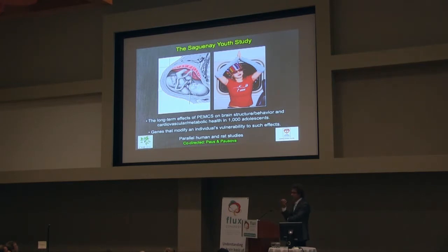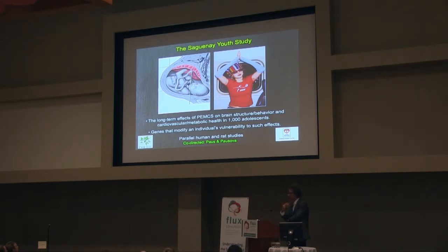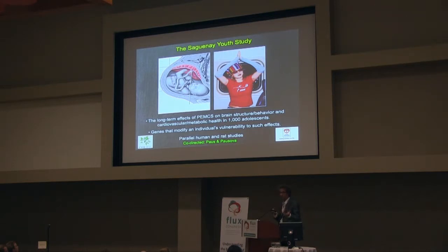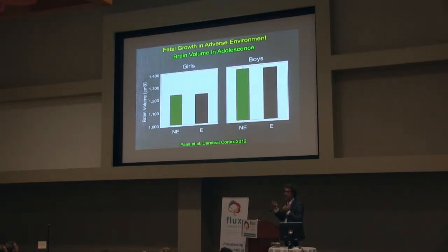We set up the study so that half of the participants — adolescents between 12 and 18 years of age — would have been exposed in utero to maternal cigarette smoking, and the other half, non-exposed, were matched to the exposed by maternal education, thereby eliminating or minimizing one of the main differences between mothers who smoke and those who don't: their education. The first question is: are the brains different in terms of their size?